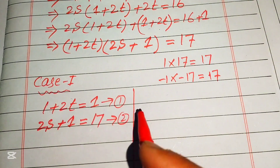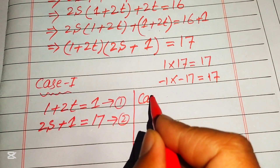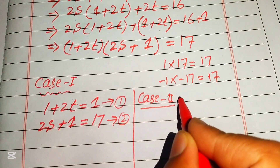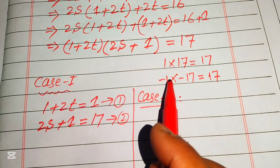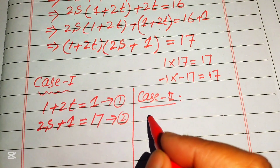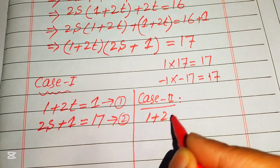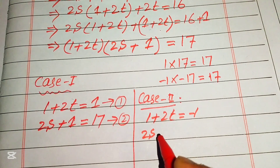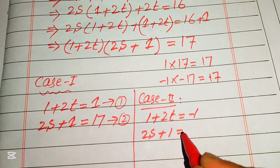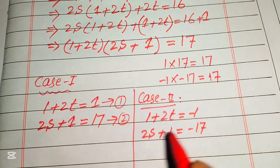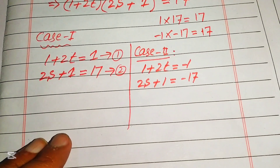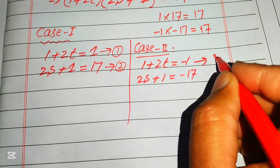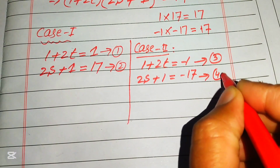In Case 2, we compare the factors with the negative pair: (1 plus 2t) equals minus 1 (Equation 3) and (2s plus 1) equals minus 17 (Equation 4).